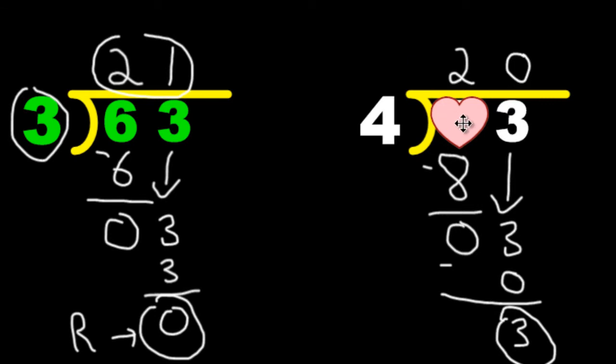And our answer is going to be 20 with a remainder of 3. So if we had this much money, $83 shared among 4 people, each person will get $20. And at the end of it all, when it's all split, there's going to be $3 left over.